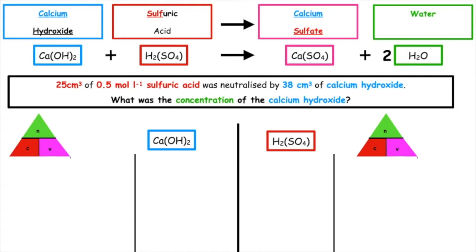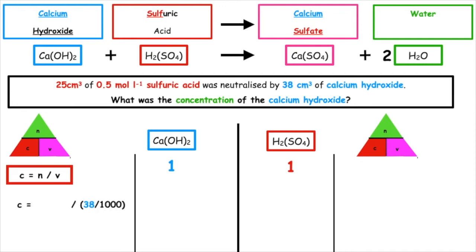We then do the mole ratio. There's no number in front of the calcium hydroxide, which tells us we have one, and there's no number in front of the sulfuric acid, which tells us we also have one. We know that the question asks us to calculate the concentration, so on the right-hand side we write the formula C = N/V. This side is to do with calcium hydroxide, and we've been given 38 cm³. To change that into litres, we do 38 divided by 1000. To complete this calculation, we would need the number of moles of calcium hydroxide, which we don't have, so we're going to have to work out the number of moles of sulfuric acid that reacted with the calcium hydroxide.